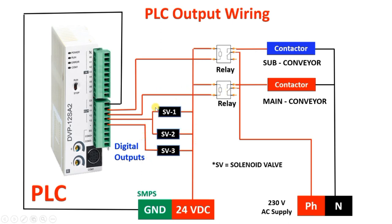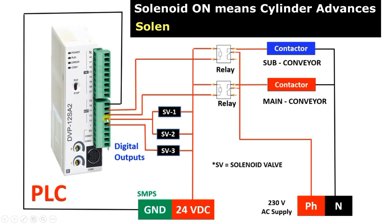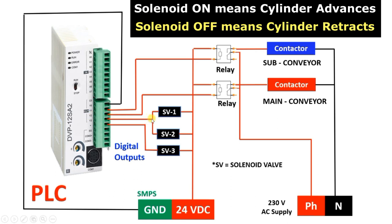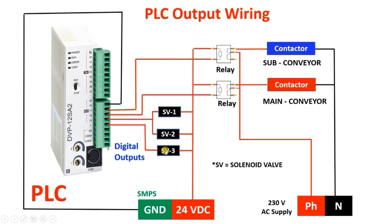For the packing machine, there are three solenoid valves and three pneumatic cylinders. Two outputs Y2 and Y3 are used. From Y2, one output activates two solenoid valves — both solenoid valve terminals connect to Y2 and 24V respectively. Y3 connects to solenoid valve 3 similarly. When Y2 is on, both cylinders advance; when Y2 is off, they retract. The same operation applies to solenoid valve 3.